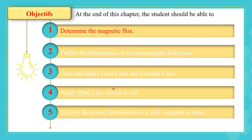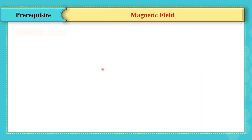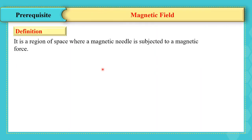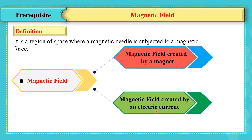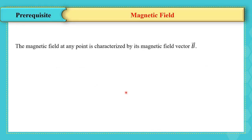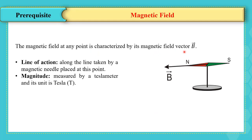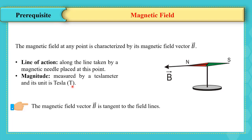In this video we are going to explain the first objective: determination of magnetic flux. First, let's talk about the magnetic field. It is a region of space where a magnetic needle is subjected to a magnetic force. The magnetic field can be created by a magnet or by an electric current. The magnetic field at any point is characterized by its magnetic field vector B. Its magnitude is measured by a device called a Tesla meter, and the unit is Tesla. The magnetic field vector B is tangent to the field lines.